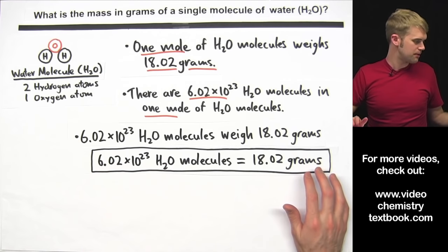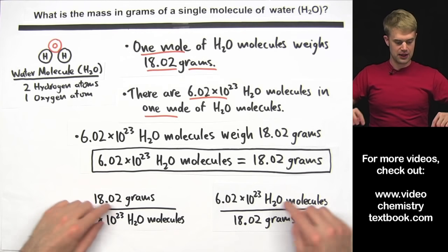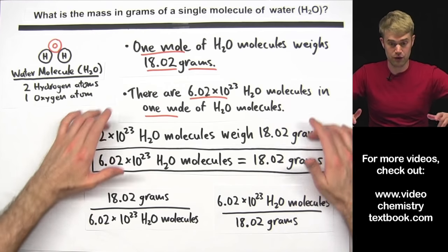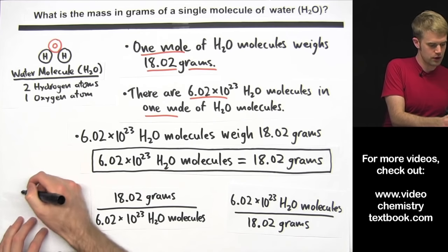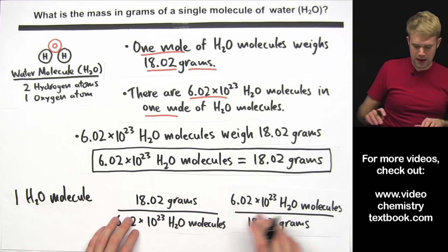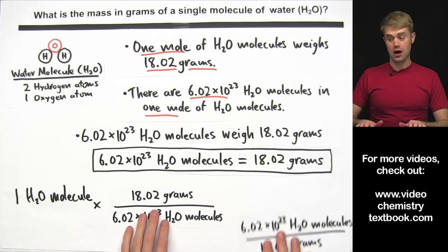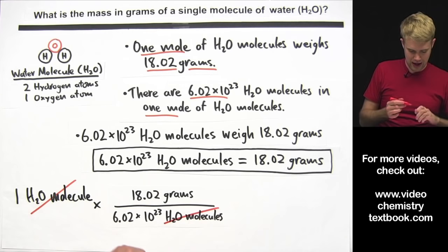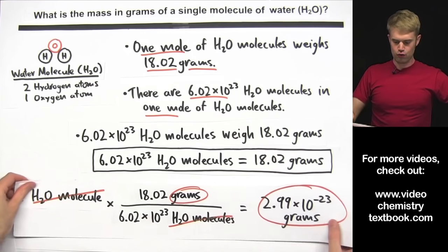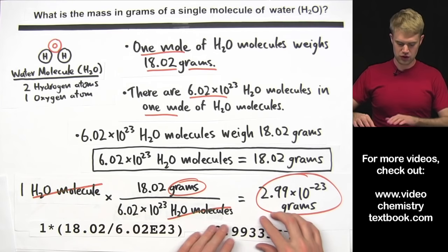We can express this as a relationship and use it to write two conversion factors. Both are based on this equation — one is just the flipped version of the other. We start with one H₂O molecule and multiply by the conversion factor that gets rid of H₂O molecules, so we use the one with H₂O molecules on the bottom. H₂O molecules cancels out, leaving us with grams. When we do the math and round to three significant figures, we get 2.99 times 10 to the negative 23rd grams.